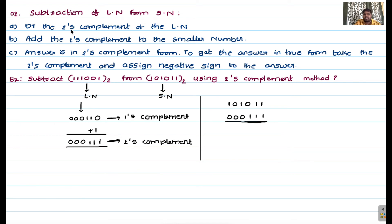For two's complement subtraction of a larger number from a smaller number, we have three steps: determine the two's complement of the larger number; add the two's complement to the smaller number; the answer is in two's complement form — to get the true form, convert it back using two's complement and assign a negative sign to the answer.